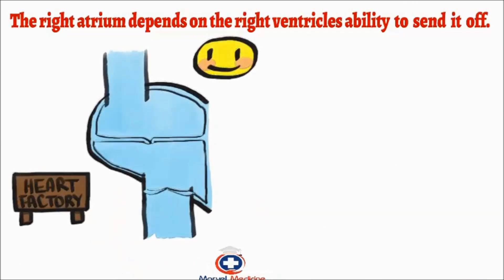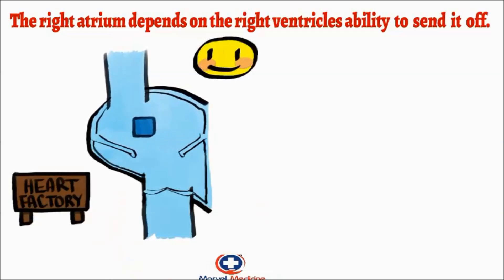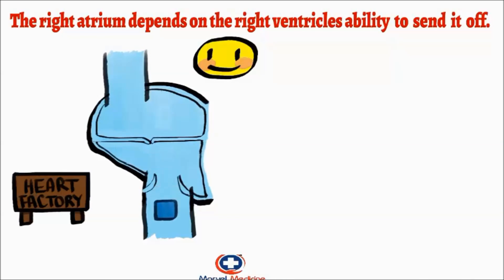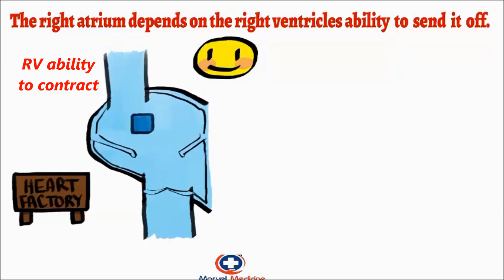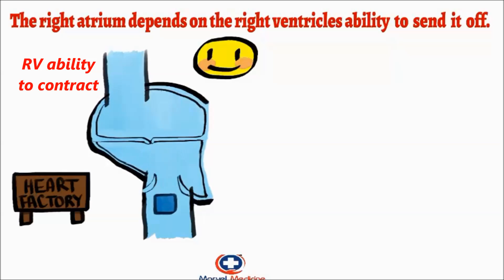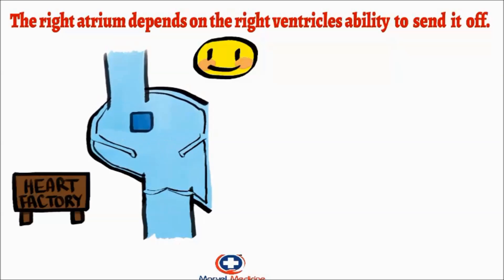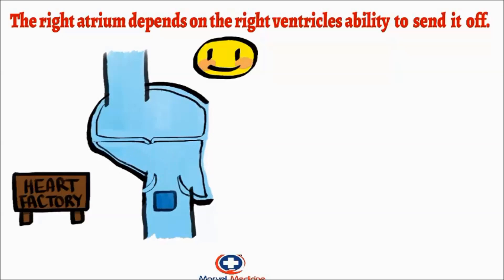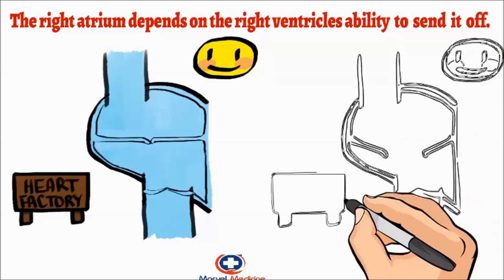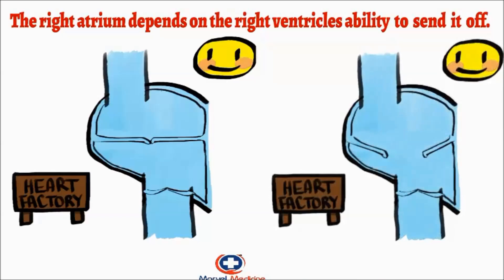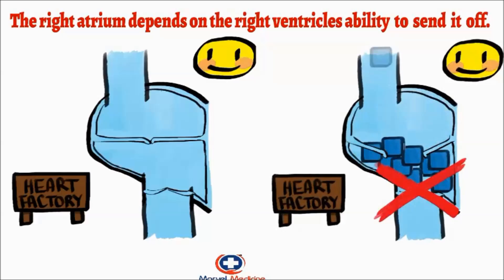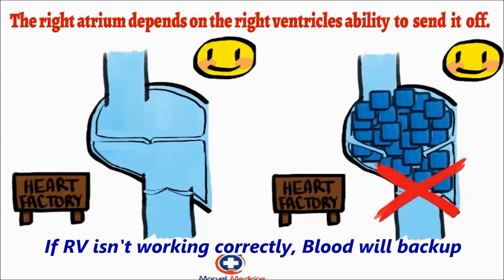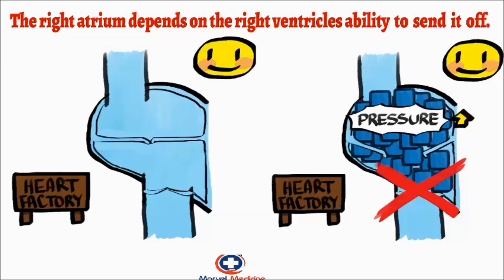Imagine a factory. We have a product which gets sent from the right atrium to the right ventricle, which is the end of the factory line. Our transport system is the right ventricle's ability to contract. If that transport system isn't working, the products are going to back up because we can't ship them out. The heart does the same thing — if the right ventricle isn't working correctly, the blood will back up, the right atrium won't be able to get rid of its blood, and pressure will increase.